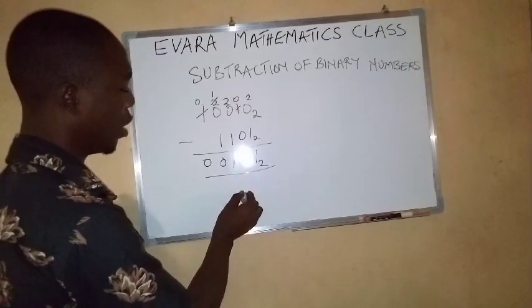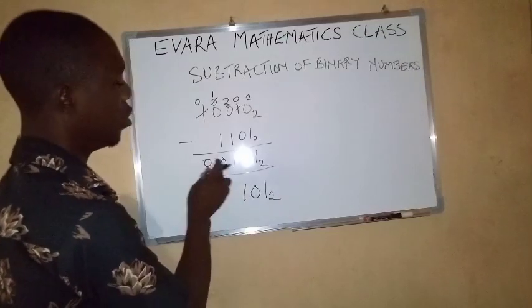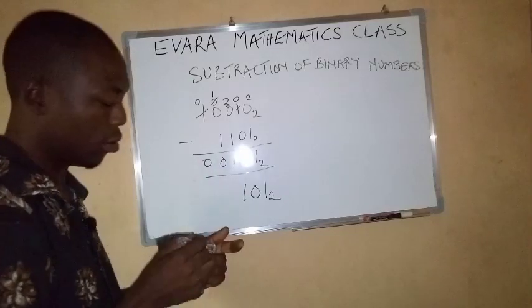Or better still, you can write it as 1, 0, 1, base 2, since these zeros are irrelevant.